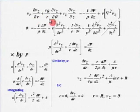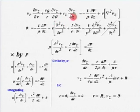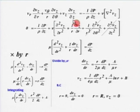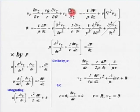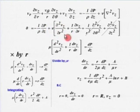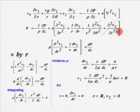The first term on the left-hand side is zero because V_R is zero. The second term is zero because V_theta is zero, and V_Z is not a function of Z but a function of R, so del V_Z by del Z also becomes zero. The whole left-hand side is zero. On the right-hand side: 0 = −(1/ρ)(∂P/∂Z) + ν[∂²V_Z/∂R² + (1/R)(∂V_Z/∂R)], since V_Z is not a function of theta or Z.